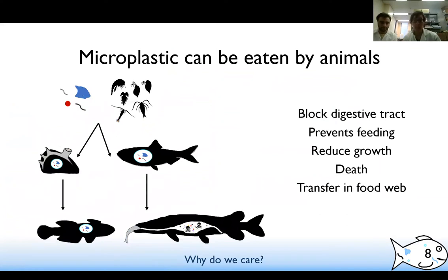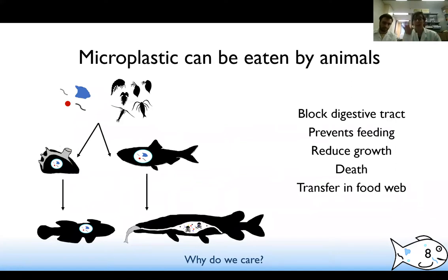Why do we care about these small pieces of plastic we can't easily see? In aquatic environments like rivers, lakes, or oceans, these tiny pieces of plastic are the same size as plankton. Plankton are small organisms that control all life in the oceans and rivers — they are the main food source for many animals and are at the base of the food web. Because they're the same size, a small fish feeding on plankton might accidentally ingest plastic, which gets stuck in its stomach, can block its digestive system, and may prevent the fish from feeding or growing well.